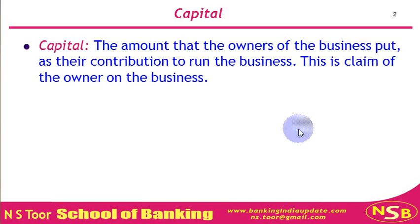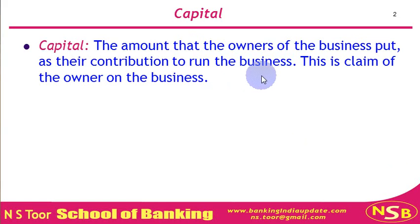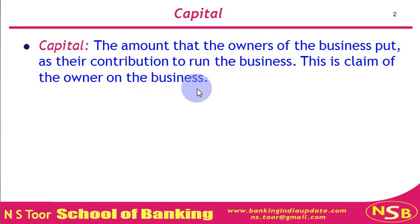The first term is capital. What is meant by capital? Capital is that amount which owners of the business bring as their contribution to run the business. That contribution is called capital. Capital is the claim of the owners on the business, so for the business it is a liability, and for the owners it is an asset. Capital is a liability towards the owner of the business.